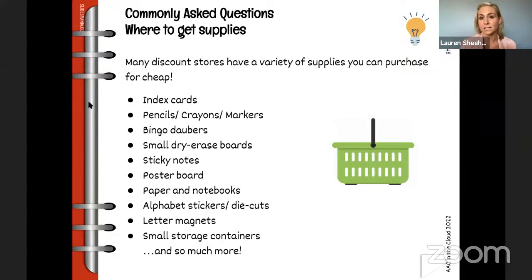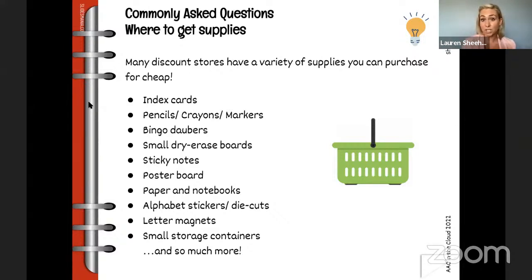Let's talk about some commonly asked questions. A lot of times people ask: where do I get supplies to do this? We want to share that you don't need a lot of expensive tools and you don't need to spend hundreds of dollars. You already have a lot of things in your home. Think about all you can do with an index card — write letters, write words, label things, make lists, write notes. If you don't have writing supplies, grab a bin at your local discount store and spend about ten dollars to buy a lot of different things that can support emergent literacy.